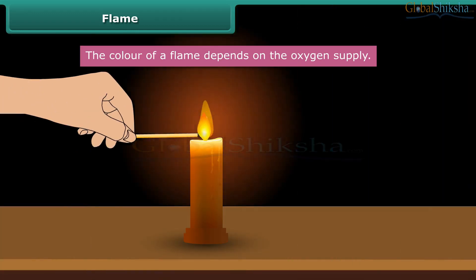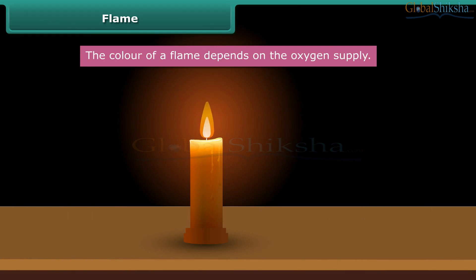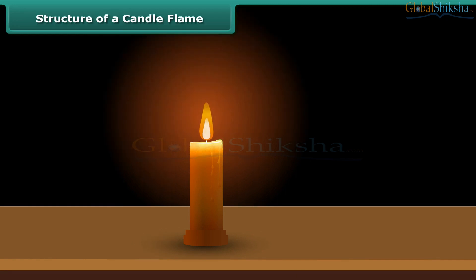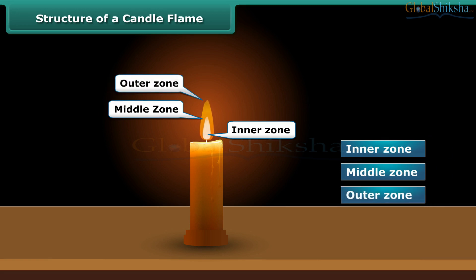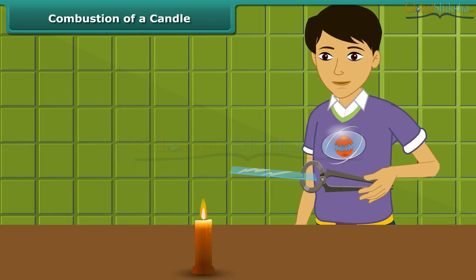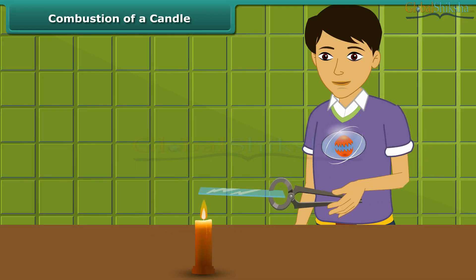When we burn the candle with a matchstick, the heat of the matchstick melts and vaporizes wax, which rises through the wick and forms a flame. A candle flame can be divided into three regions: inner zone, middle zone, and outer zone. Let us watch Rohan performing an activity.